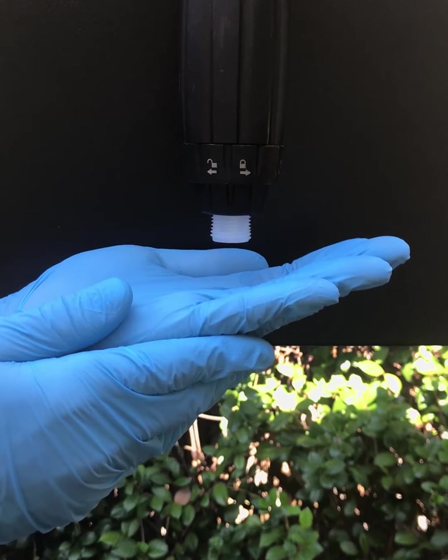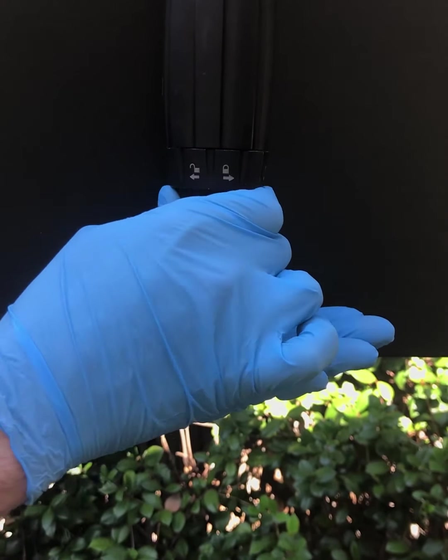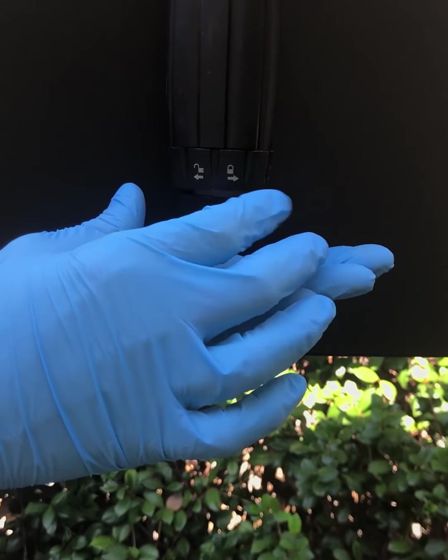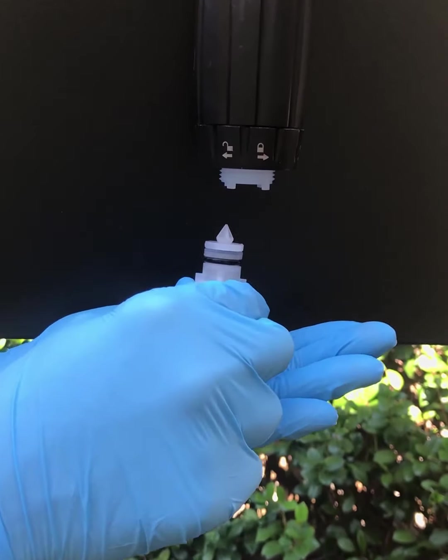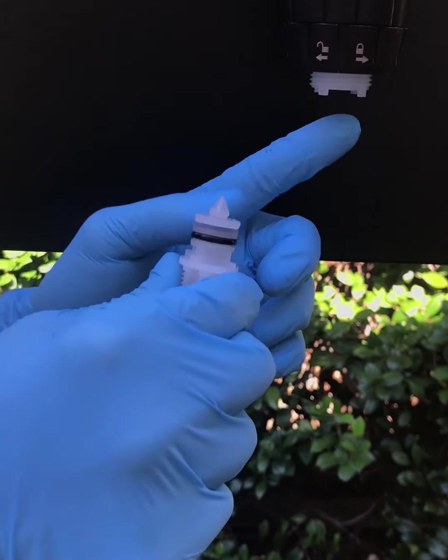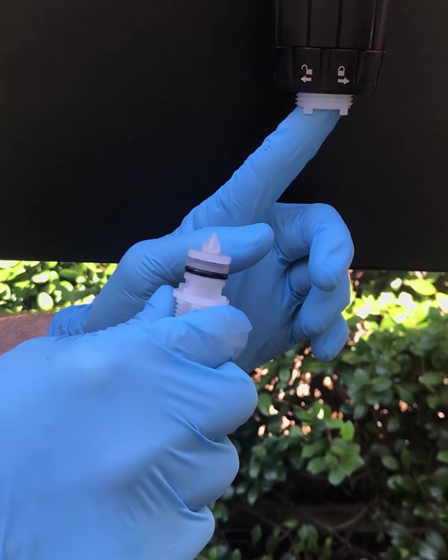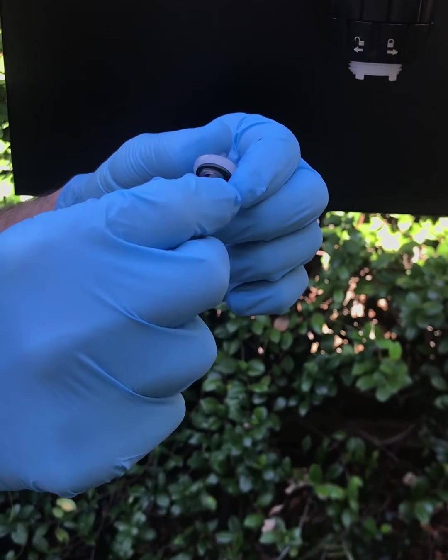Locate the check valve nut at the bottom of the stem assembly and remove, keeping one hand underneath all the parts in case something falls during this process. Remove the check valve nut and pull down on the check valve barb. The check valve assembly may come with the barb or it may stay up inside the stem itself.